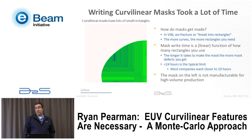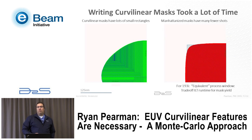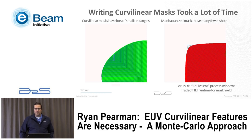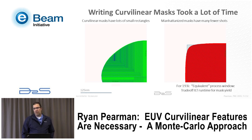The large number of rectangles for this particular fracture is too large to be done in high volume production, so you Manhattanize in order to practically make the mask — which is what has historically been done for inverse lithography. In the case of these ovals, that turns into a single rectangle, done in exactly one shot. For immersion lithography, the thought is this gives you an equivalent process window. So you're trading off ILT runtime for mask yield.